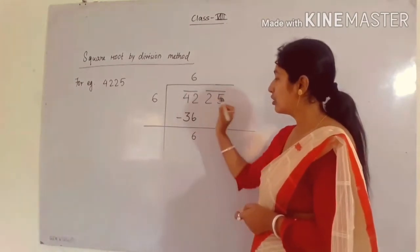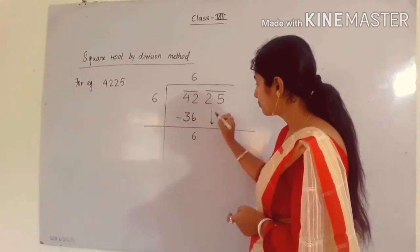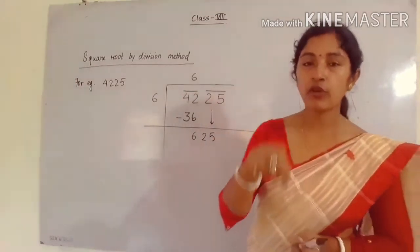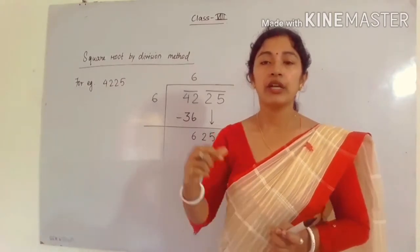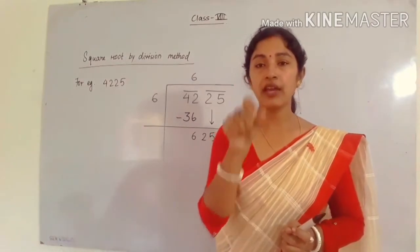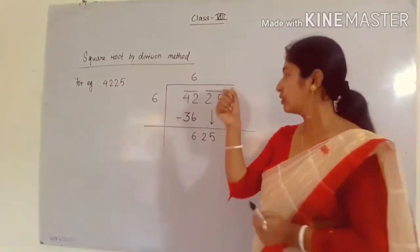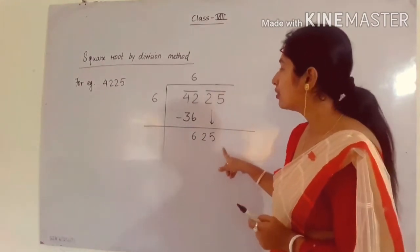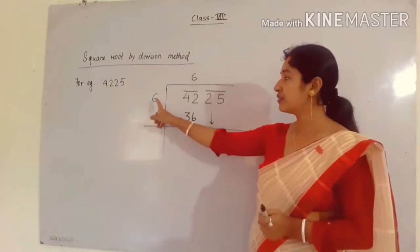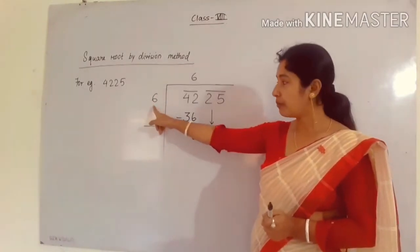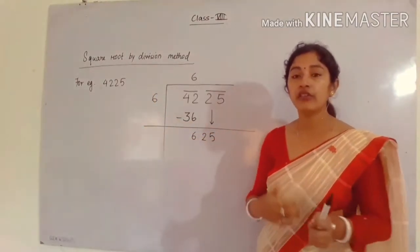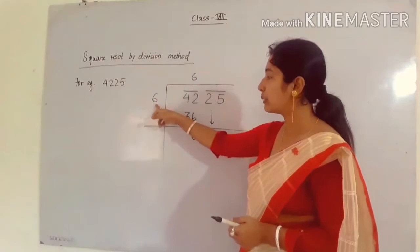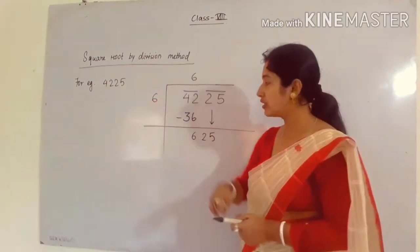Now you have to bring down 25. So the new number is 625. In normal division only one digit comes at a time, but here you have to take two digits — you take the pair. Now, your divisor changes every time in this method. So you have to double 6. The double of 6 is 12, so you write 12 here. Draw a horizontal line, leaving one space for one digit.